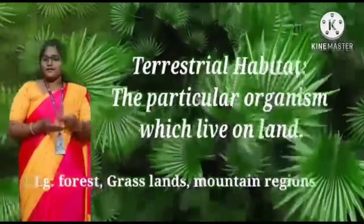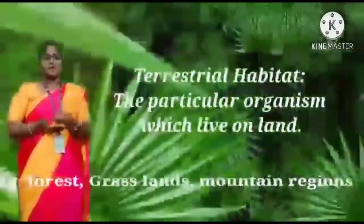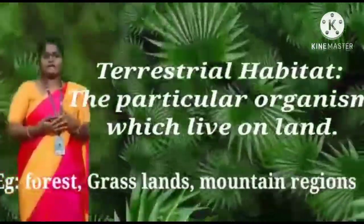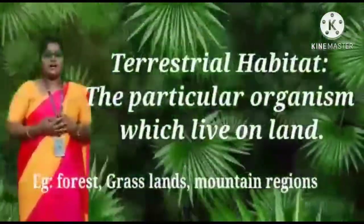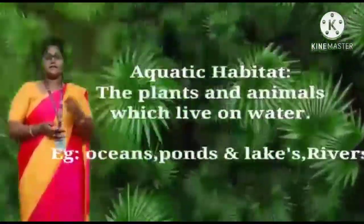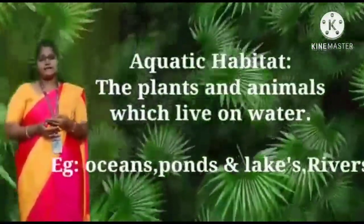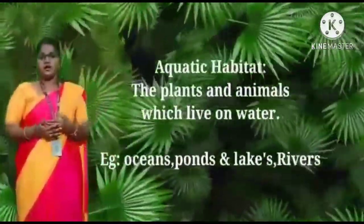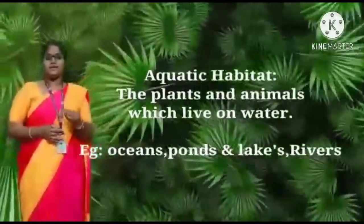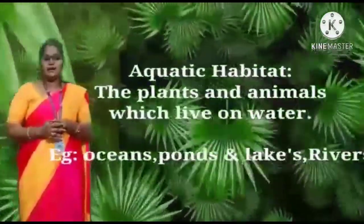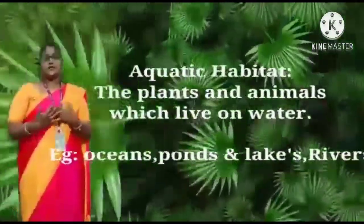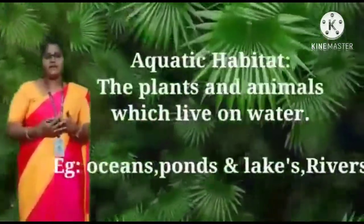Examples of terrestrial habitats include grasslands, forests, and mountain regions. And what is aquatic habitat? On the other hand, the plants and animals or organisms which live in water are called aquatic habitats. Examples of aquatic habitats include ponds, swamps, lakes, rivers, sea, and ocean — everything comes under aquatic habitat.